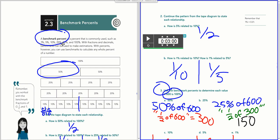We talked about benchmark fractions before - one, one half, and zero as fractions. Benchmark percents are basically the same idea. They help us estimate.